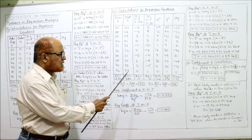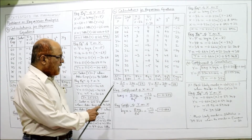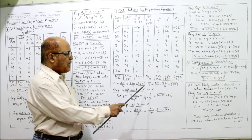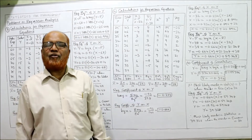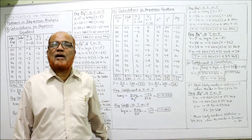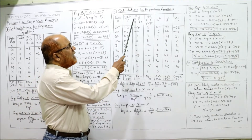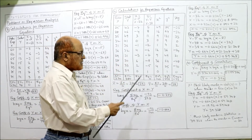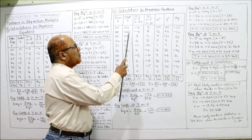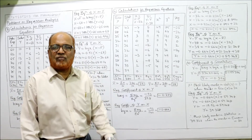For the regression equation calculations, total of X is 320 and total of Y is 380. X bar equals 320 divided by 10 equals 32; Y bar equals 380 divided by 10 equals 38. Both means are whole numbers, so take deviations from the actual mean. Small x equals capital X minus 32: 25 minus 32 is minus 7; 28 minus 32 is minus 4; 35 minus 32 is 3; 32 minus 32 is 0. The summation of small x must equal 0.